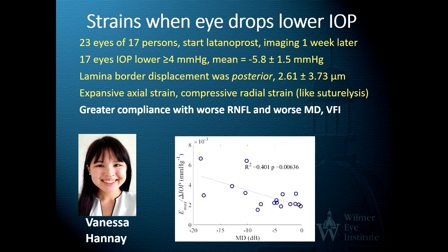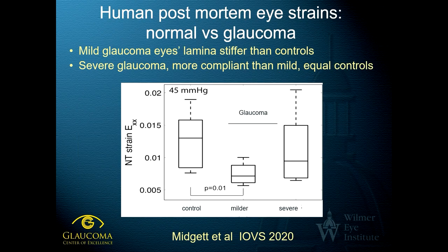This flies in the face of the standard thought that glaucoma eyes are stiffer than normal. We will need to study much more whether eyes are stiffer or not compared to normal, but the suggestion that worse glaucoma correlates with greater compliance is certainly suggestive that greater strain is not a good sign. We've also done studies of postmortem human eyes measuring strain, and in those eyes, the more severe the glaucoma, the greater the strain — so both in living and dead eyes, this seems to be a universal rule.